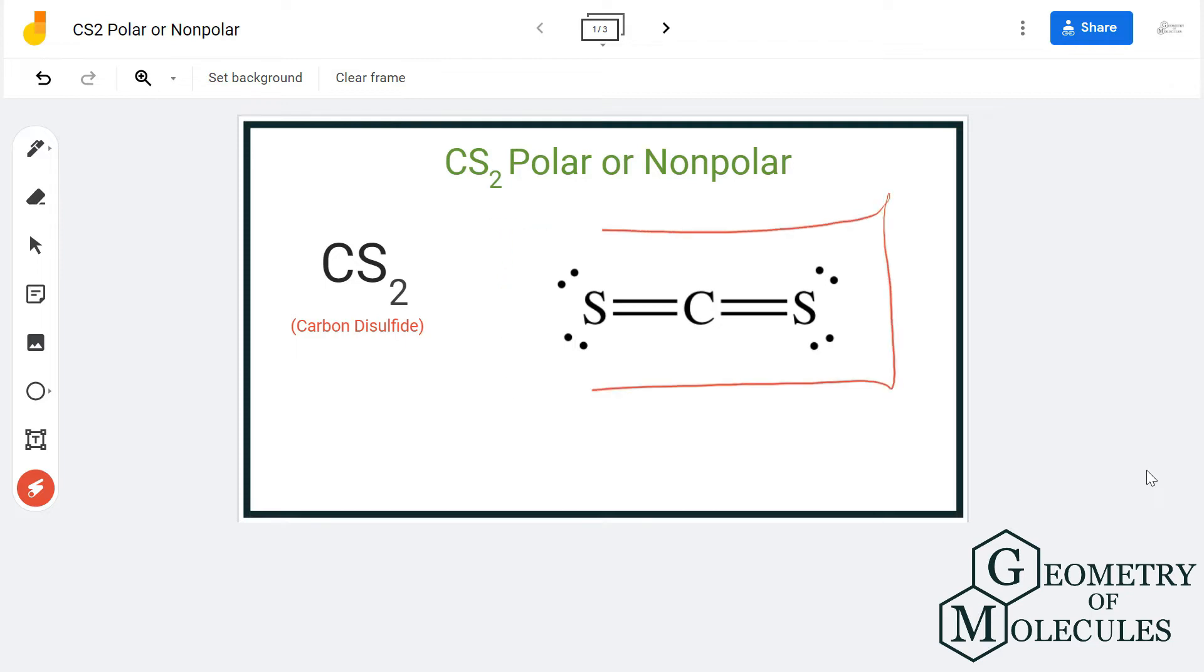Here is the Lewis structure for carbon disulfide, in which carbon is forming double bonds with both sulfur atoms. The distribution of electrons is quite symmetrical, as well as the molecule itself, as there are two sulfur atoms on both sides of the carbon.